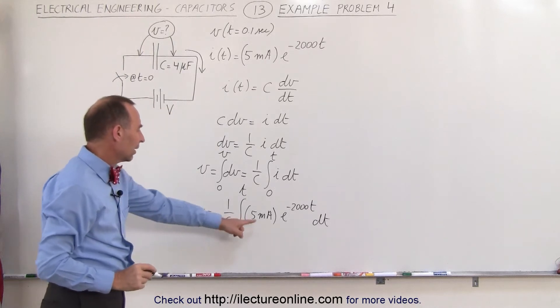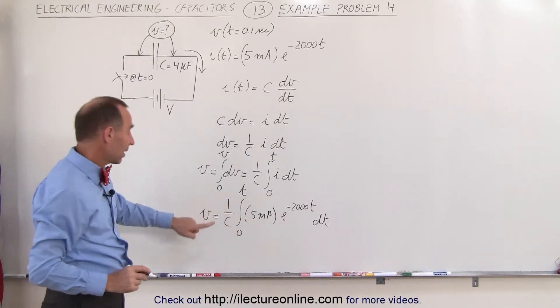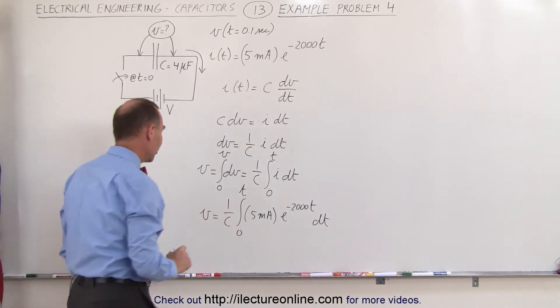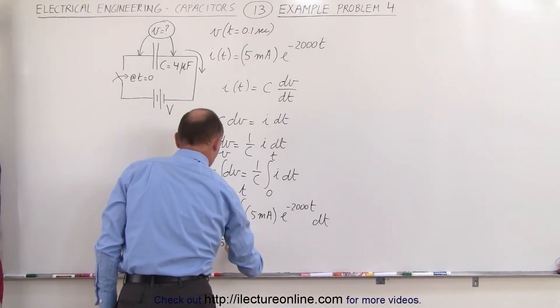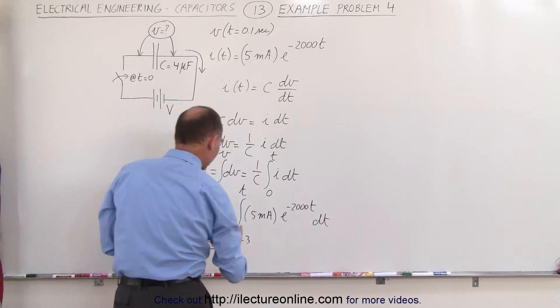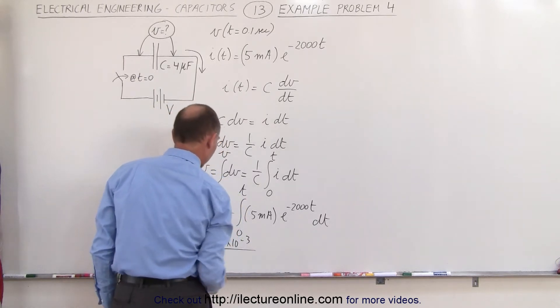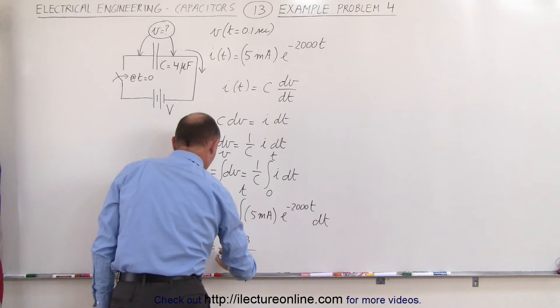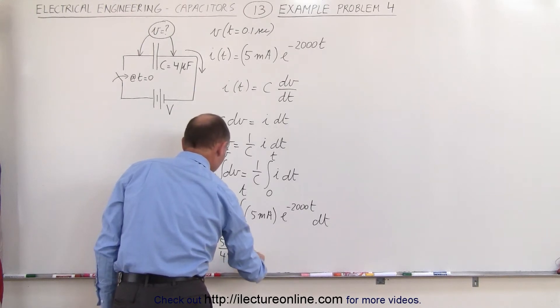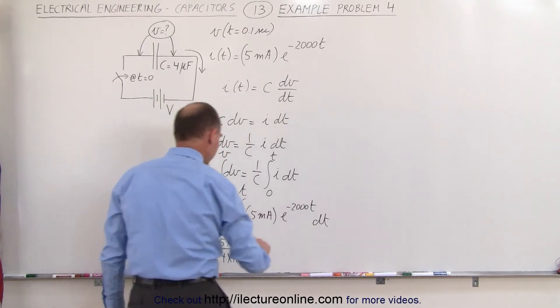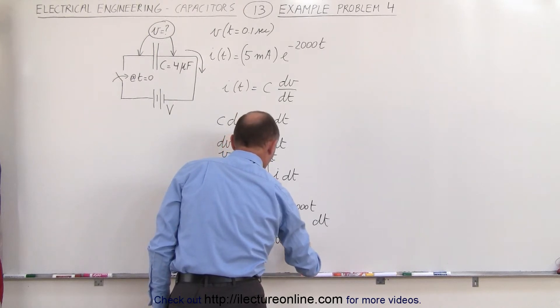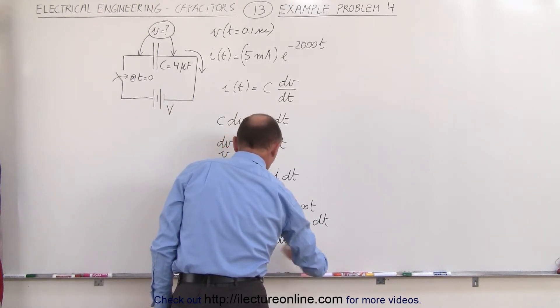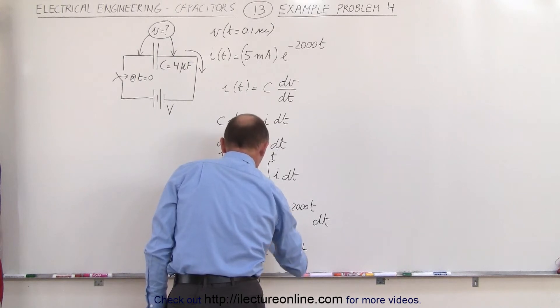Simplifying that a little bit let's go ahead and move this outside the integral sign. Let's plug in the proper value for c. So we get v is equal to 5 times 10 to the minus 3. I'm going to leave out the units right now to keep things a little cleaner. The capacitance will be 4 times 10 to the minus 6, and we have e to the minus 2000 t dt on the integral sign from 0 to time.